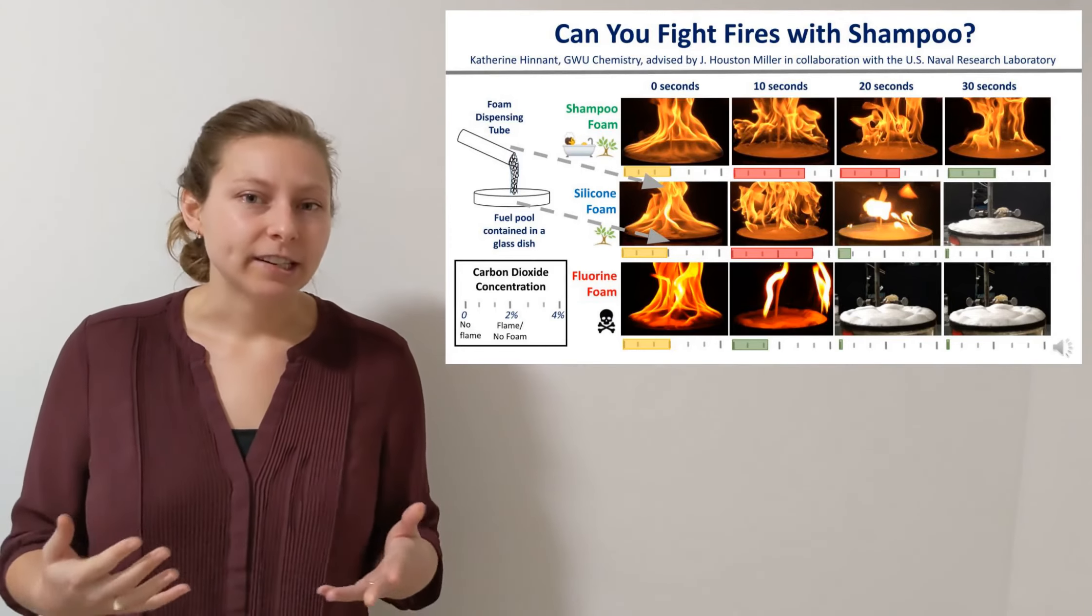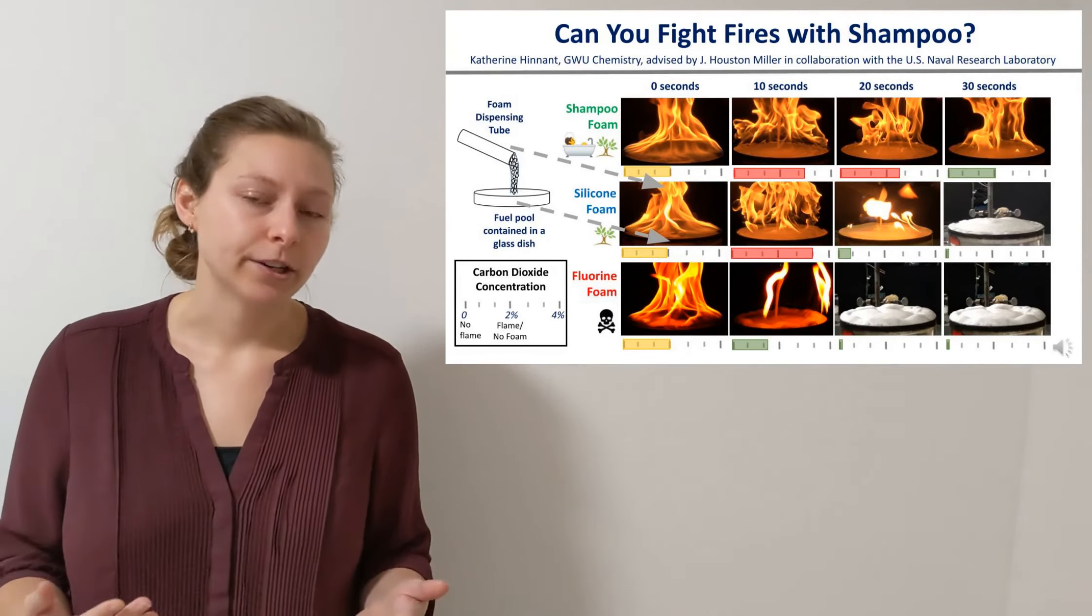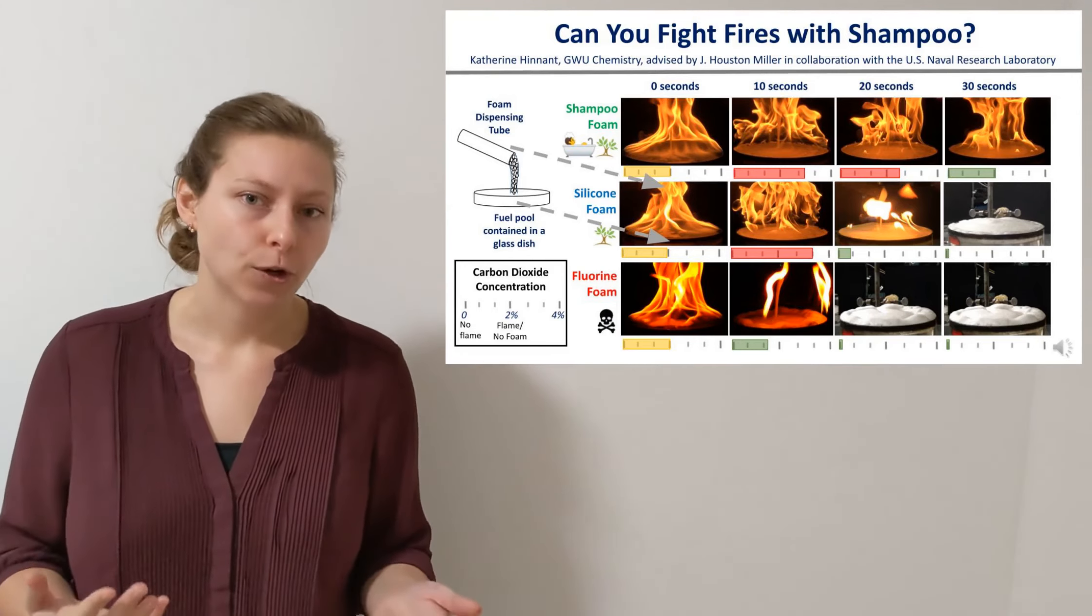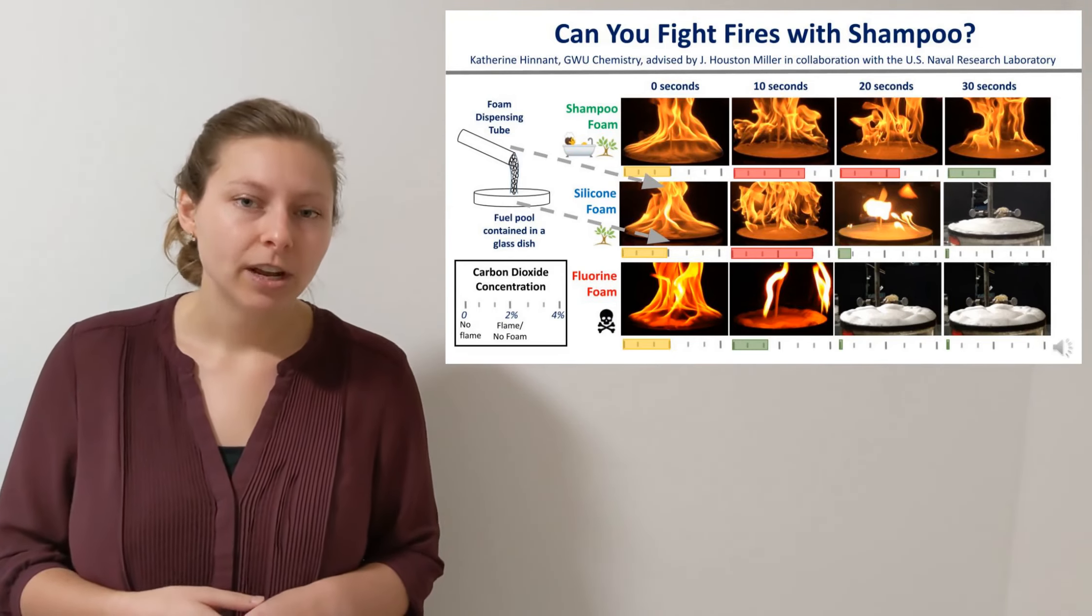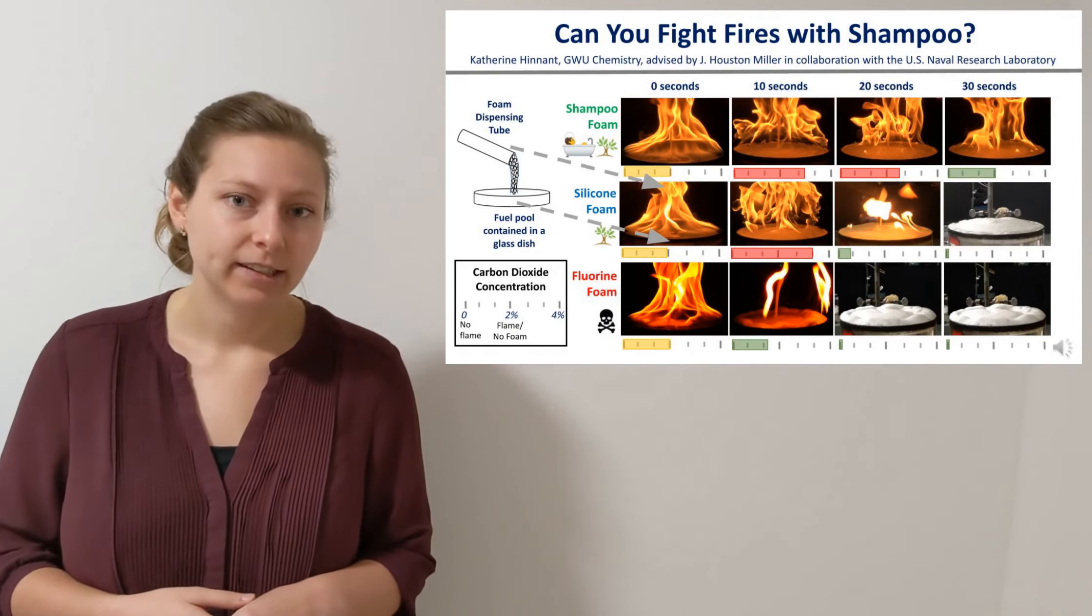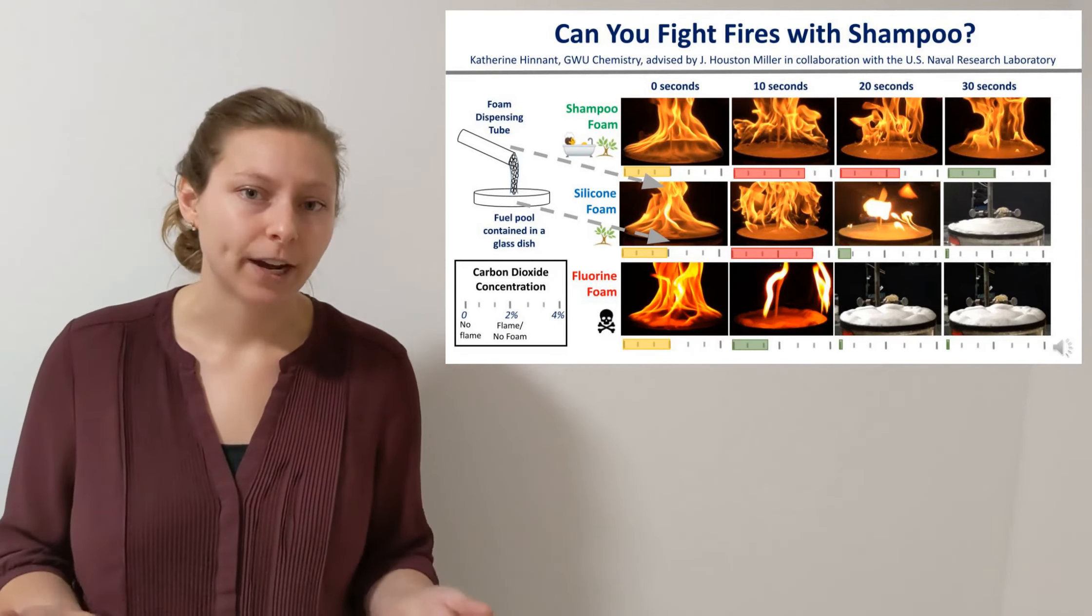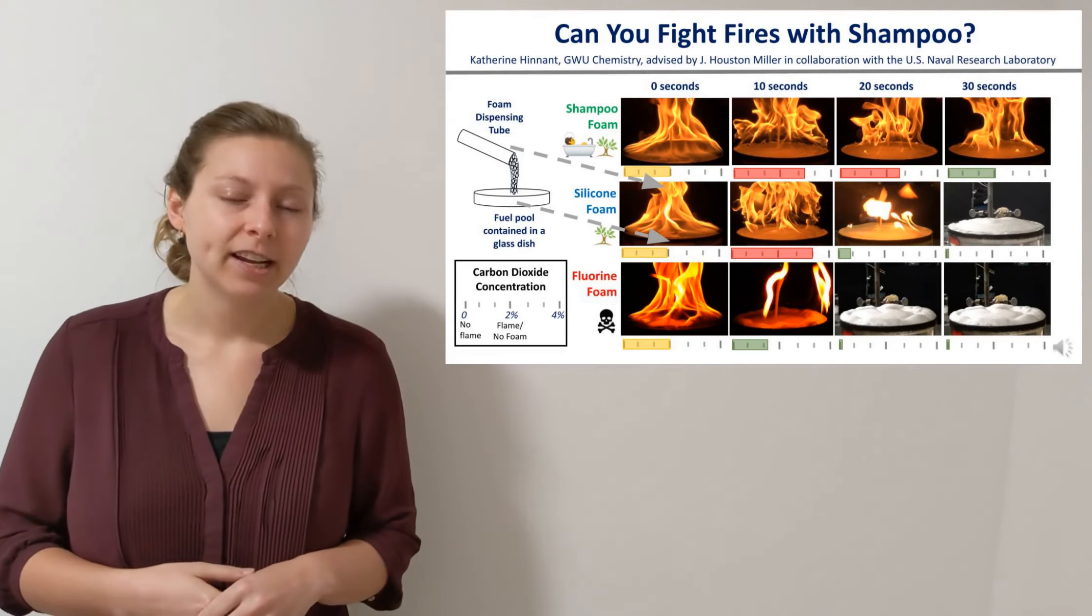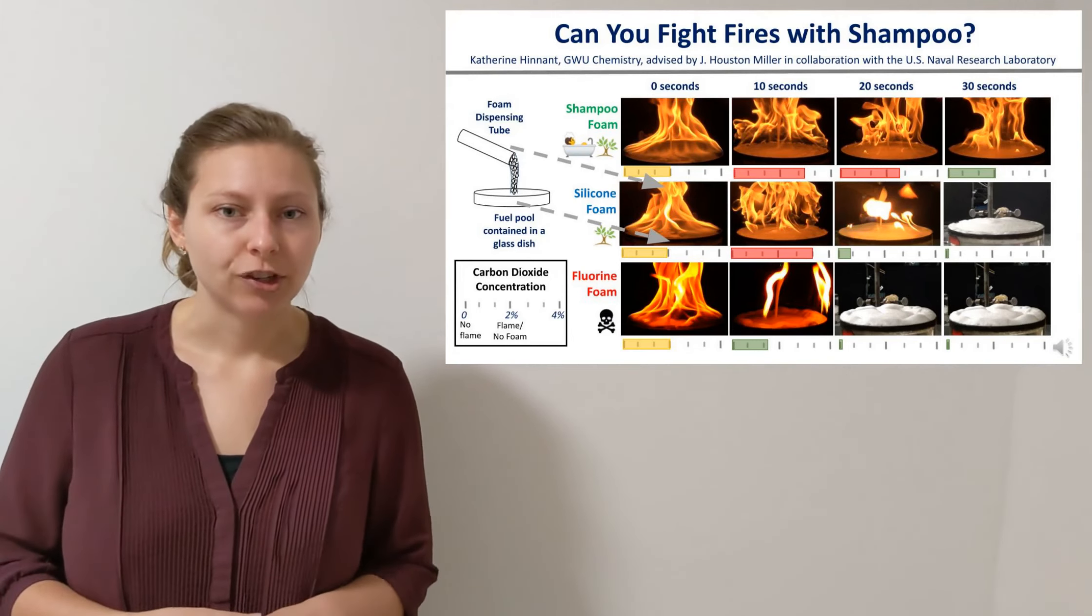Although we see differences in extinction time around 20 to 30 seconds, measured carbon dioxide data, also shown under each time-lapse image, shows differences in performance in as little as 10 seconds. Surfactants have an impact on fire suppression almost as soon as the foam hits the fuel surface, giving us insight into their role in fire suppression.